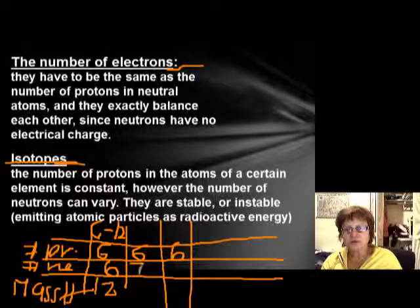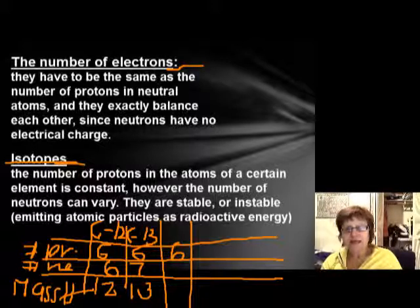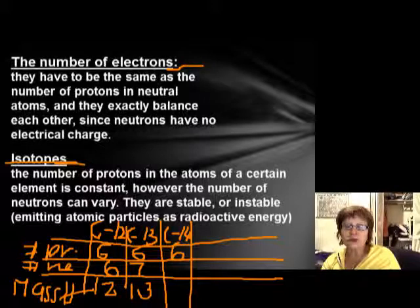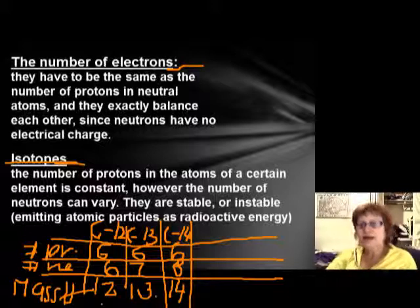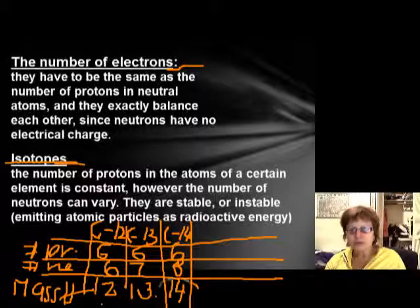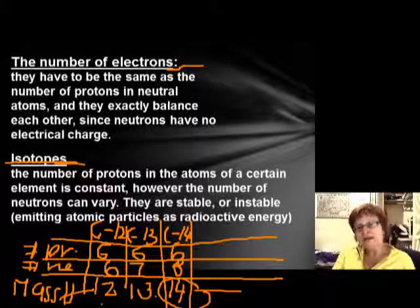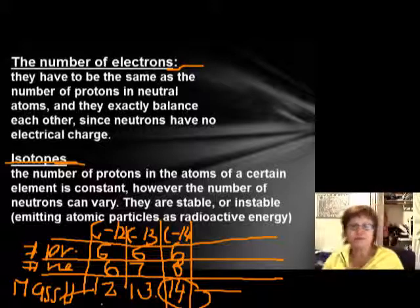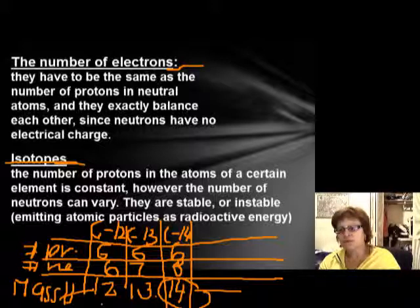If the neutrons are seven, the mass number is 13 — carbon-13. If it's carbon-14, you can calculate that the neutrons are eight. Carbon-12 and carbon-13 are stable isotopes — they will not change over time. Carbon-14, however, is an unstable or radioactive isotope; through time it decays into another element and releases a lot of energy. We'll learn more about this in historical geology.